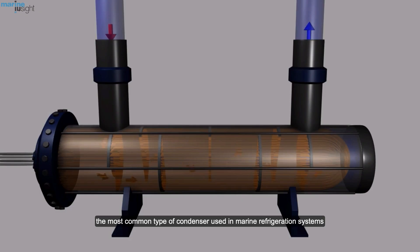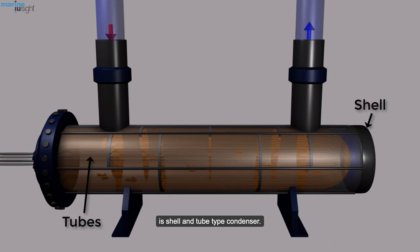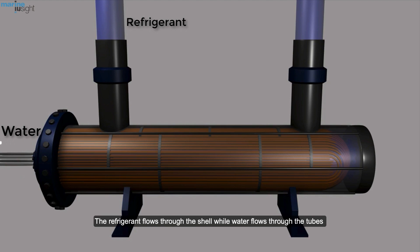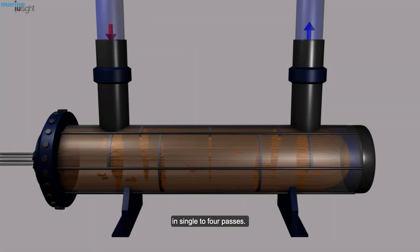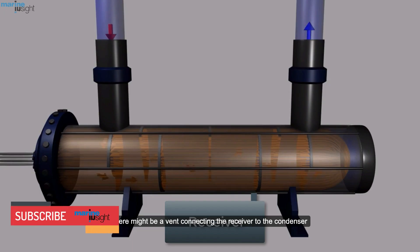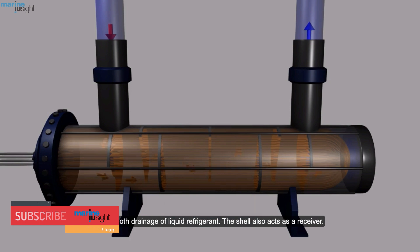The most common type of condenser used in marine refrigeration systems is shell and tube type condenser. The refrigerant flows through the shell while water flows through the tubes in single to four passes. A separate tank which will act as a receiver can be integrated with the condenser. There might be a vent connecting the receiver to the condenser for smooth drainage of liquid refrigerant. The shell also acts as a receiver.